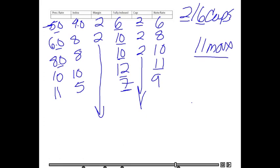Let's do one more. So that 9 becomes our previous interest rate. Let's say the index stays the same, so our fully indexed rate stays the same. This time we can go down to 7 or back up to 11, and we'll go down to 7.